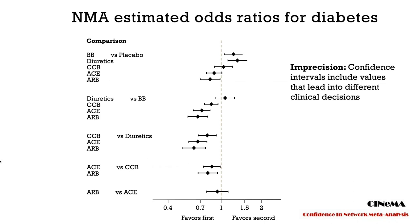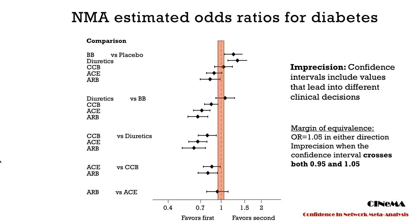Here is again the forest plot-aligned presentation of results from the network meta-analysis of odds ratios for incidence of diabetes, for each intervention versus any other. We have decided that odds ratios between 0.95 and 1.05 suggest the interventions are more or less similar, whereas values below 0.95 and above 1.05 are deemed clinically important. Imprecision is associated with the crossing of one or two of the boundaries of the margin of equivalence.